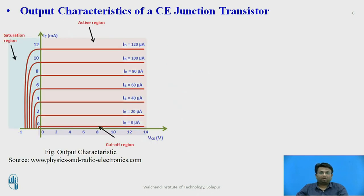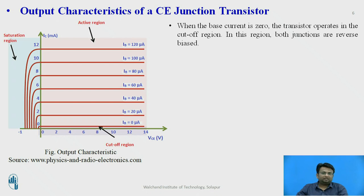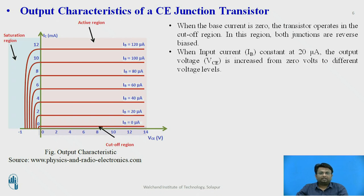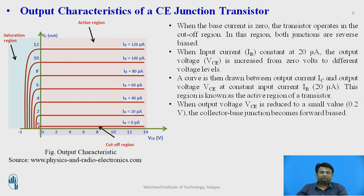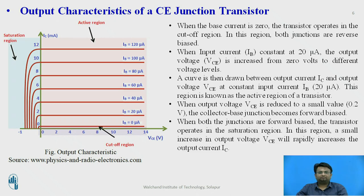The output characteristics is the plot of output voltage VCE versus output current IC (the collector current). When the base current is zero, the transistor operates in the cutoff region — both junctions are reverse biased. When IB is constant at zero microampere, VCE increases from zero to different voltage levels. The curve drawn between IC and VCE at constant input current (0 to 20 microampere) represents the active region. When VCE is reduced to about 0.2 volt, the collector-base junction becomes forward biased.